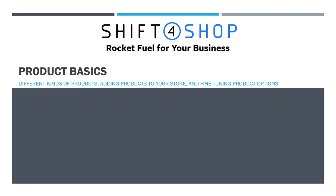Let's talk about some product basics. We have different kinds of products that you can add to your store — there are three of them. First is going to be a physical product, something like an article of clothing. Next is going to be a digital product, something like a PDF, an ebook, or maybe an image. And then the last kind of product that you can add to your store is going to be a gift certificate.